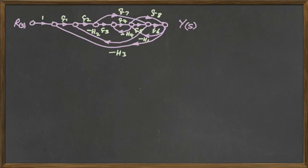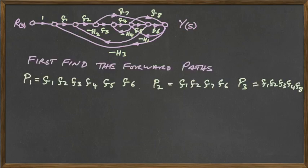The forward paths are those that go from the input RS to the output YS. And we have listed three of them below, showing the various branches that we take to get there.